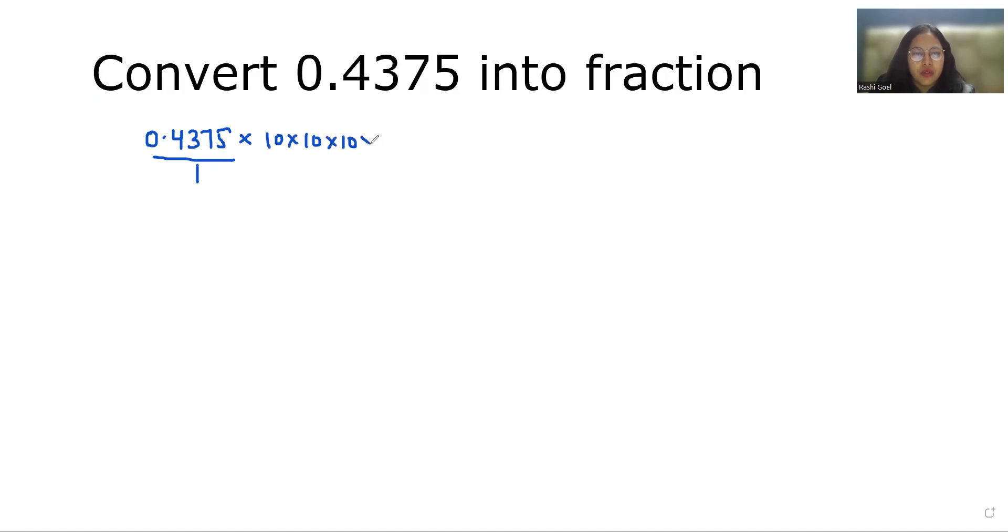So numerator becomes 4375 and denominator becomes 10,000. Now we have to reduce it.